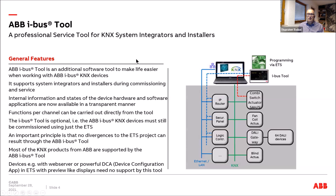The ABB iBAS tool is an additional tool, complementary to the ETS, to make life easier when working with ABB iBAS KNX devices. It supports system integrators and installers during commissioning and service of KNX installations. You can view internal information about product states, hardware and software applications in a transparent manner — like a visualization — and you can carry out functions directly from the tool, such as switching actuators.